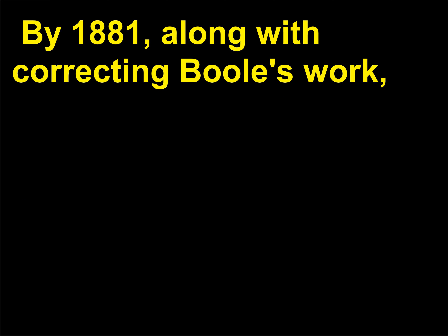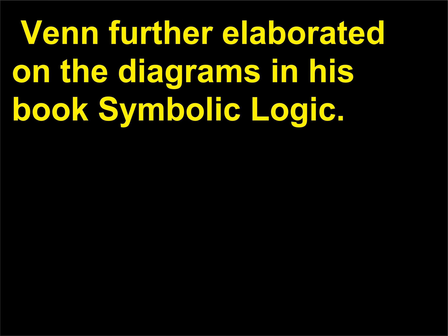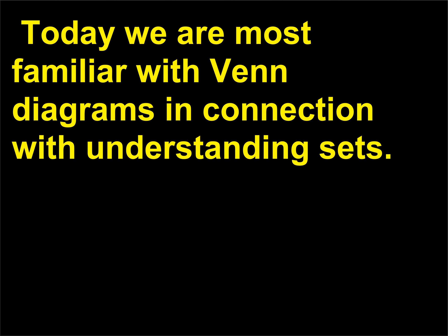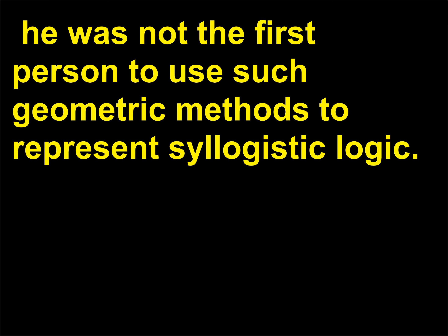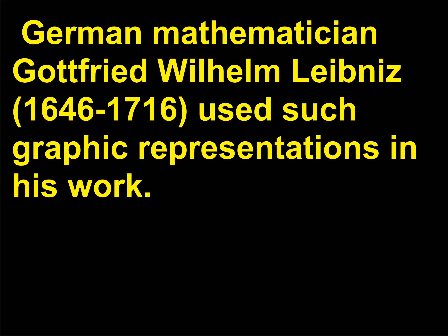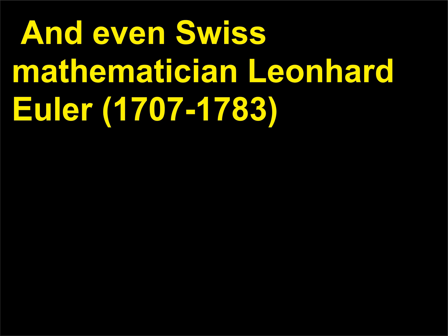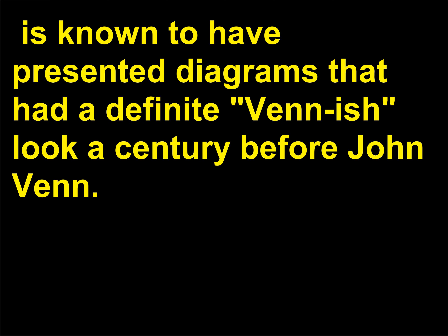By 1881, along with correcting Boole's work, Venn further elaborated on the diagrams in his book Symbolic Logic. Today we are most familiar with Venn diagrams in connection with understanding sets. Although Venn is credited with the diagrams, he was not the first person to use such geometric methods to represent syllogistic logic. German mathematician Gottfried Wilhelm Leibniz (1646–1716) used such graphic representations in his work. And even Swiss mathematician Leonhard Euler (1707–1783) is known to have presented diagrams that had a definite Venn-like look, a century before John Venn.